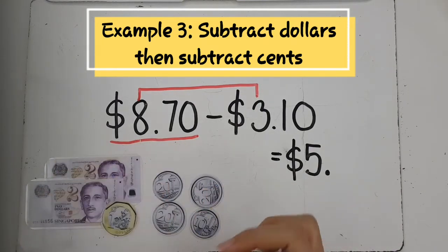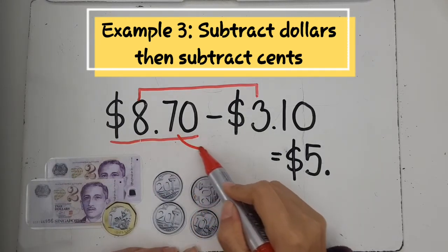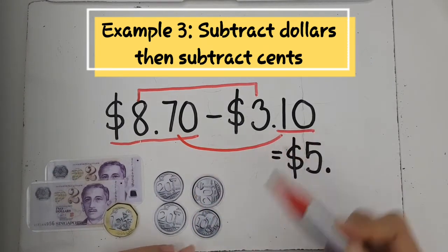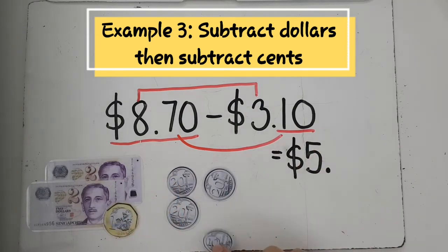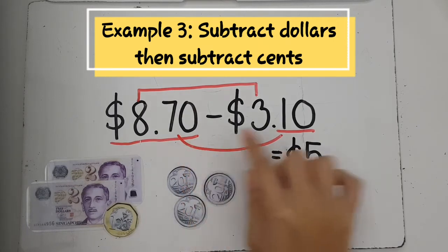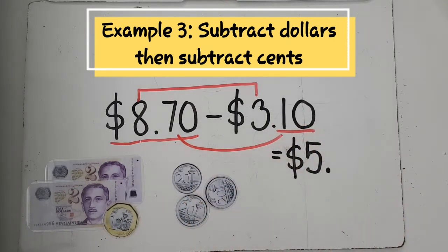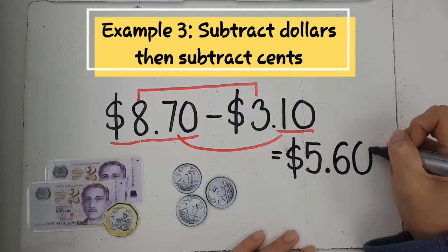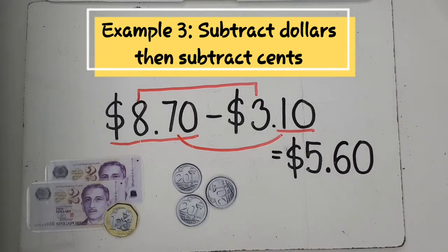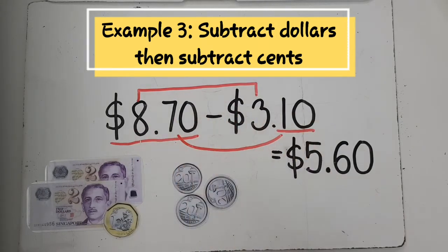Now for the cents: I have 70 cents and I need to minus 10 cents. I take away the 10 cents and I'm left with 60 cents — 70 minus 10 is 60. So the answer is $5.60. This method is called: subtract the dollars first, then subtract the cents.